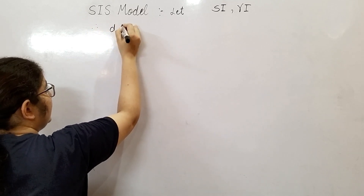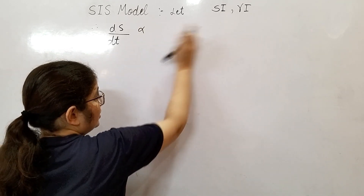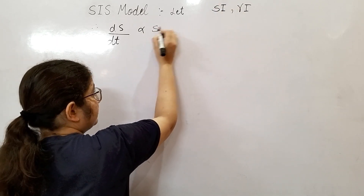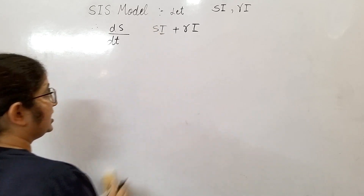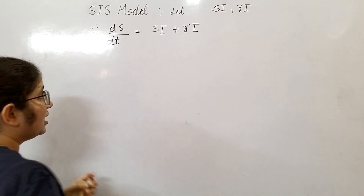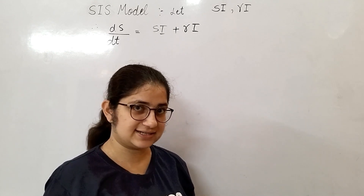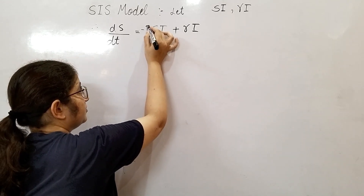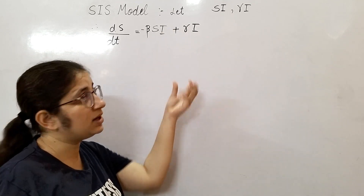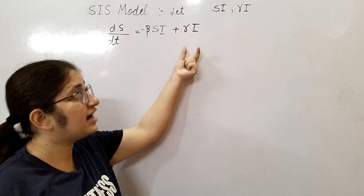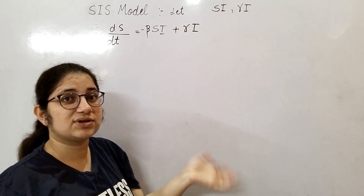Your first differential equation is ds/dt — the rate of change in susceptibles at time t. Susceptibles are decreasing as they become infected, so we have a negative term, and susceptibles increase as infected persons recover at rate gamma I, giving a positive term. That's why ds/dt = -beta*S*I + gamma*I.